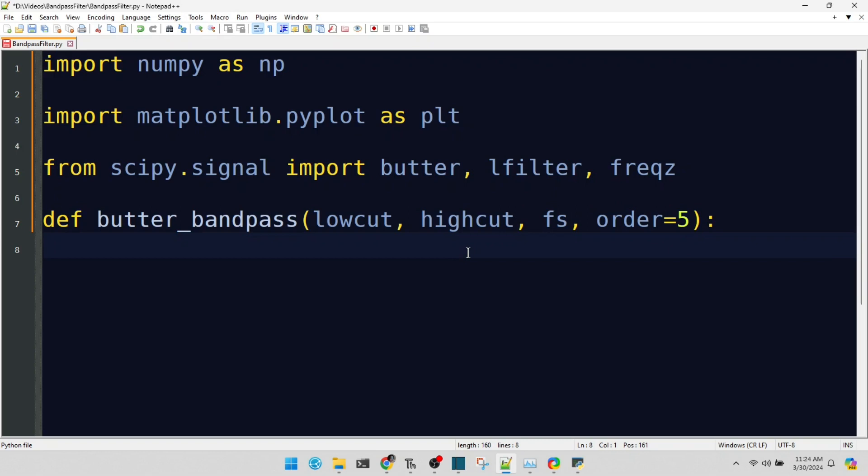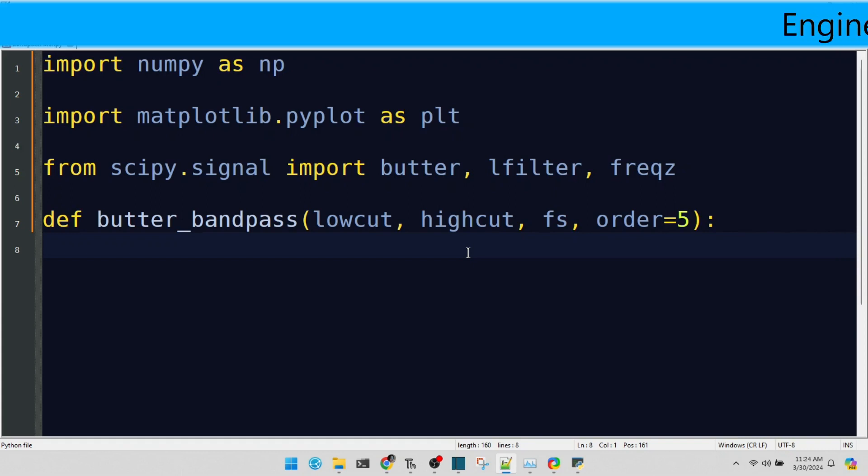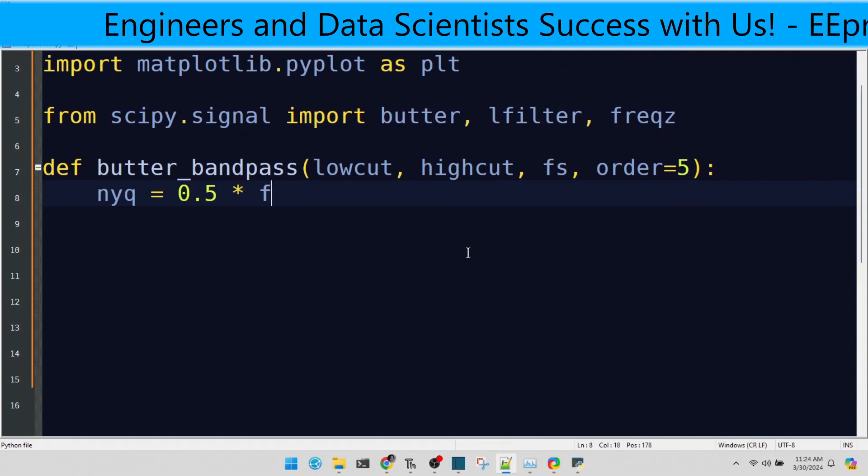Here, we calculate the Nyquist frequency. It's half the sampling rate of your signal. Understanding the Nyquist frequency is crucial in digital signal processing to avoid aliasing.